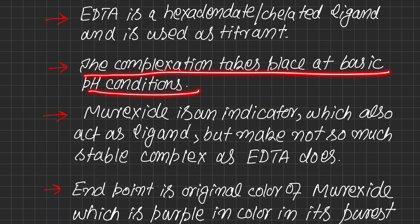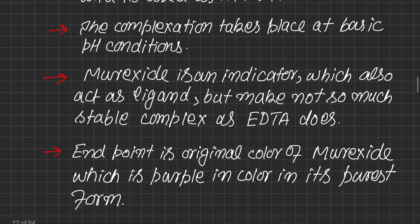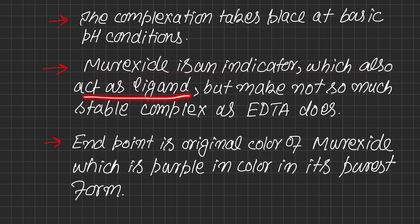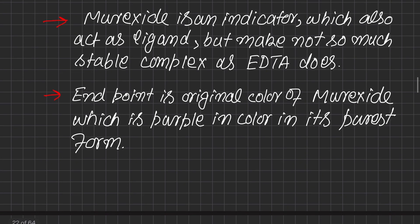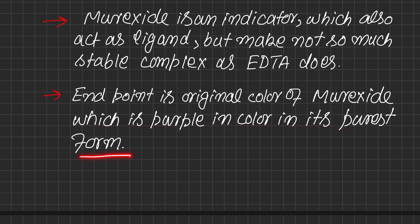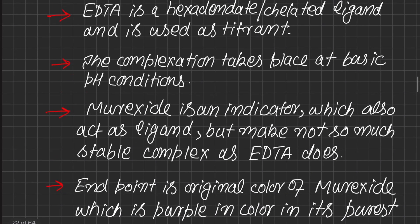The complex between EDTA and calcium takes place at basic pH conditions, so we will add a buffer to the solution. We will use muroxide as an indicator, which also acts as a ligand but does not form as stable a complex with calcium as EDTA does. The endpoint of this titration is the appearance of the original purple color of muroxide.